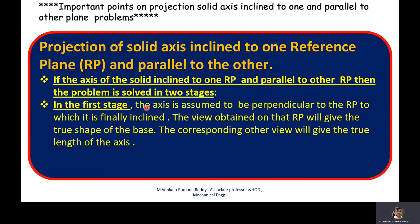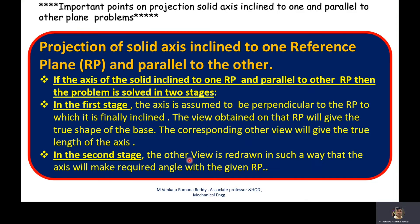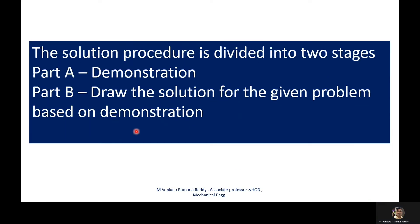In the first stage, the axis is assumed to be perpendicular to the reference plane to which it is finally inclined. The view obtained on that reference plane will give the true shape of the base, and the corresponding other view will give the true length of the axis. In the second stage, the other view is redrawn in such a way that the axis makes the required angle with the given reference plane. The solution procedure is divided into two stages.